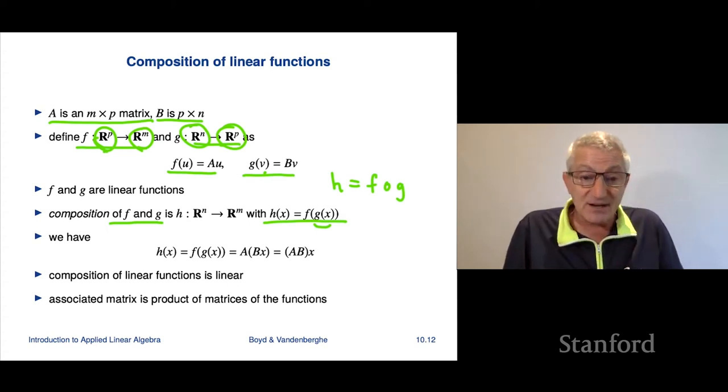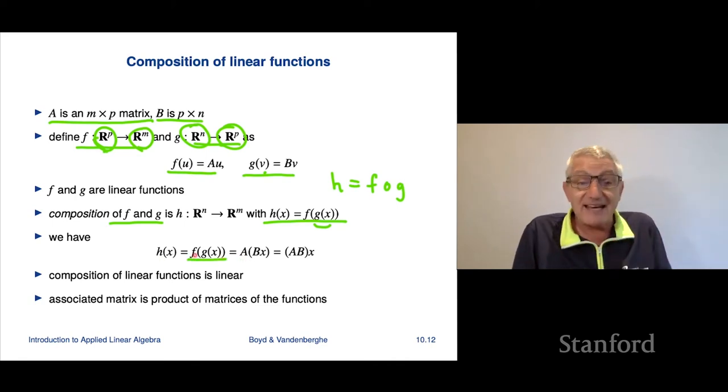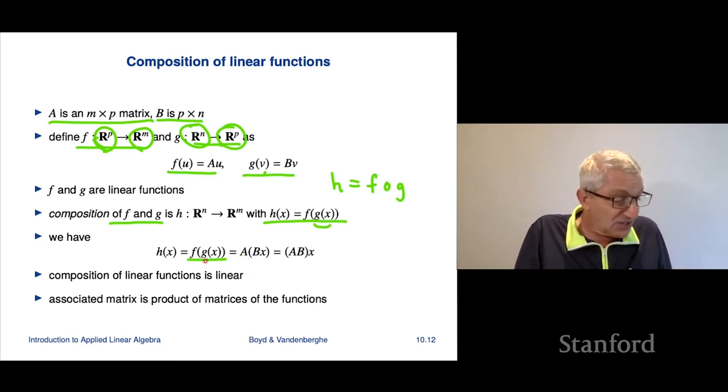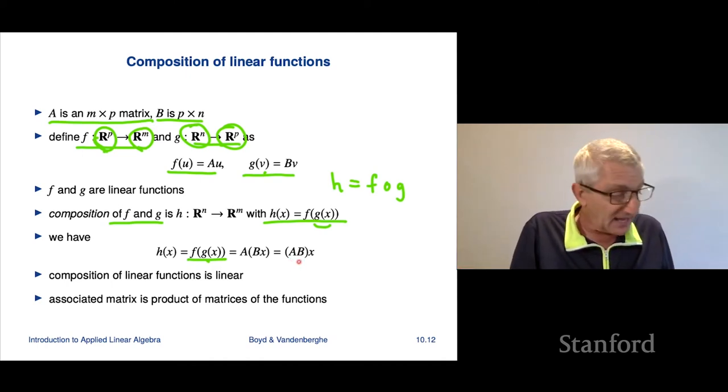Now let's figure out what this composition function is. Well, h of x is f of g of x, and that's, so f, to take f of anything, you simply multiply by the matrix A. So we put A there, g of x is indeed Bx. So it's A times Bx. But as you know, this is a matrix triple product if we think of x as a matrix and it is associative, and that means that I can multiply A and B together.